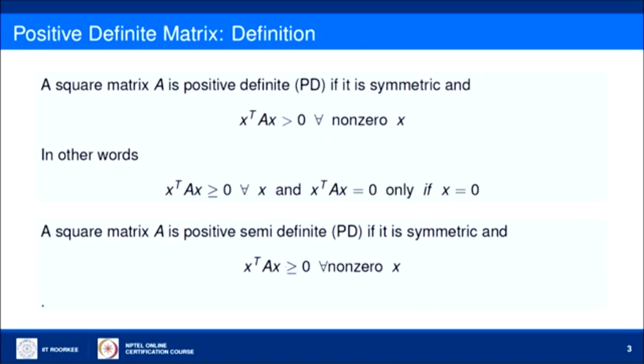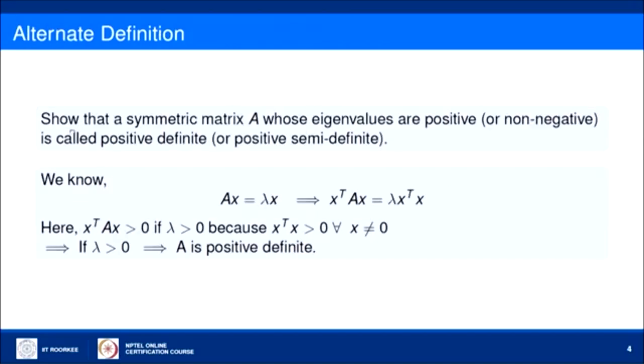A trivial example of a positive definite matrix is the identity matrix. A symmetric matrix A whose eigenvalues are positive or non-negative is called positive definite. Here, we need to prove: given an n by n matrix A, if all the eigenvalues of A are positive then it is a positive definite matrix.